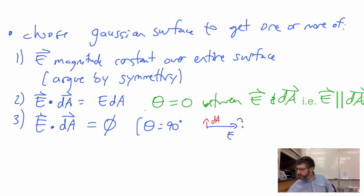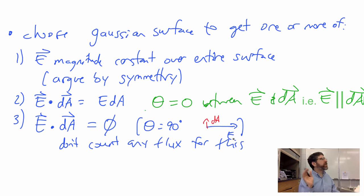So basically, if you can work this out, we don't count any flux for those surfaces. And so if you can eliminate a whole surface, okay, there's no flux through that surface. We don't have to worry about that in our integral.